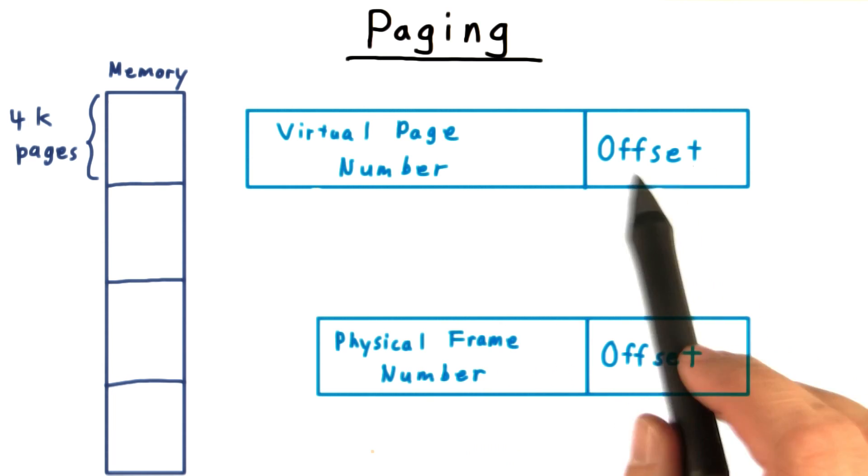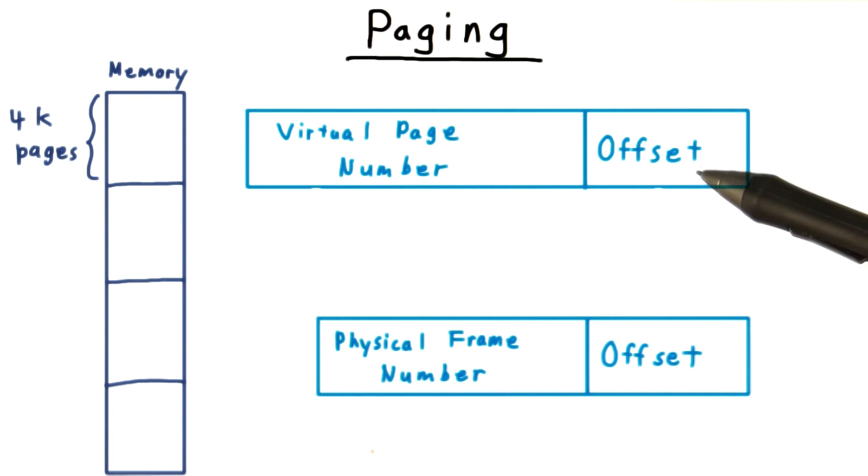The number of bits in the offset always match. That's because virtual page sizes and physical page sizes are necessarily the same.